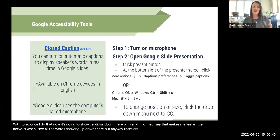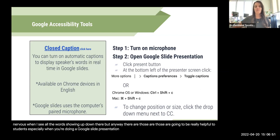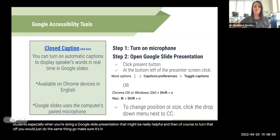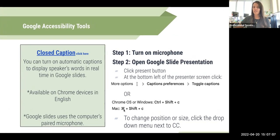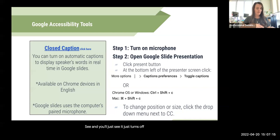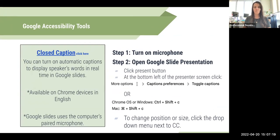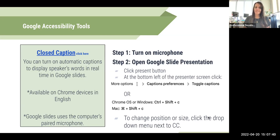Once you toggle captions on, it's going to show captions down there with anything that I say. To turn it off, do the same thing — go to presentation mode, click the three little dots, go to Caption Preferences, and toggle it off, or use Command+Shift+C. Notice that in the menu you can also change the position — if you want it to show up at the top, it will. You can also change the size; if it's on small you can make it even bigger using the dropdown menu.